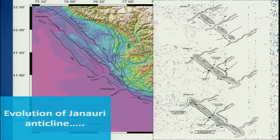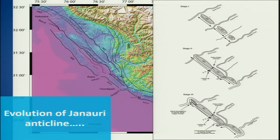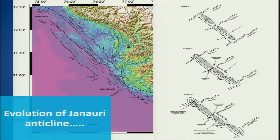This is just a model which explains that initially the Janowri anticline segments 1 and 2 started propagating away from the center in either direction and then they got linked up. Before the linkage, the Bias river used to flow through this gap, and after the merging of the link area, this was blocked and it forced the channel to flow almost parallel to the Janowri anticline along the back limb of this major feature.